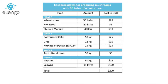The next component is molasses — twenty liters at a cost of five dollars. The next component is cotton seed cake — fifty kg at a cost of twenty-five US dollars. The next component is chicken manure — four hundred kg at a cost of thirty dollars. The next component is urea — twelve kg at a cost of ten dollars. The next component is MOP (muriate of potassium) — fifteen kg at a cost of fifteen dollars. The next component is agricultural lime — fifty kg at a cost of six dollars.